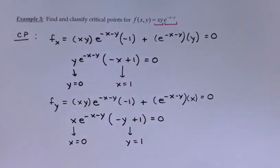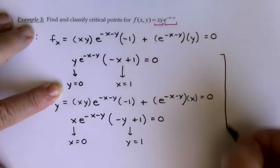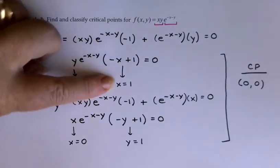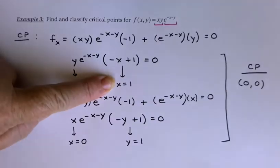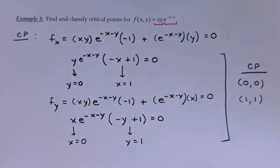I do need to be careful that I match these up correctly. One option: if y is 0 here, then it can't be 1, it must go with x equals 0. So (0, 0) is a critical point. And if x is 1, making that one 0, then I would have to let y be 1 to get this one to be 0. So my two critical points are (0, 0) and (1, 1).